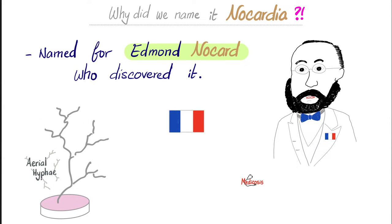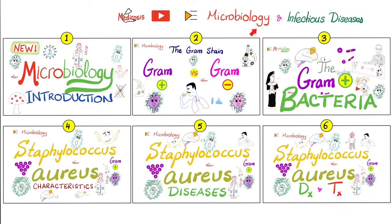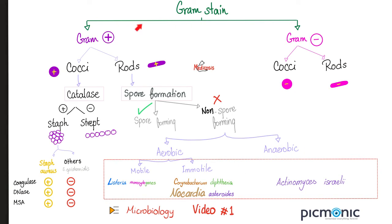Look at all of that branching action. Since the branchings of Nocardia resemble the hyphae of fungi, Nocardia was historically classified as a fungus. For maximum understanding and retention, please watch the videos in this playlist in order. Nocardia is supposedly gram-positive rod.